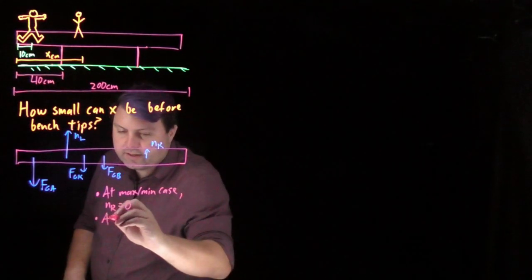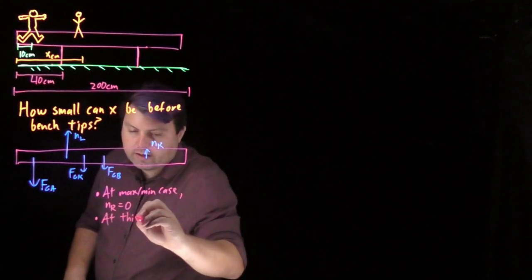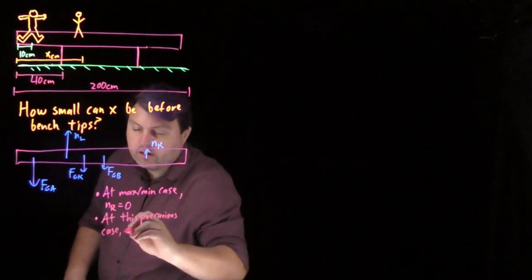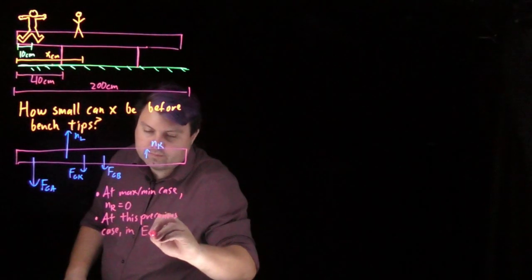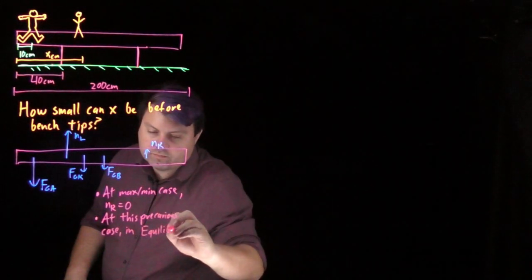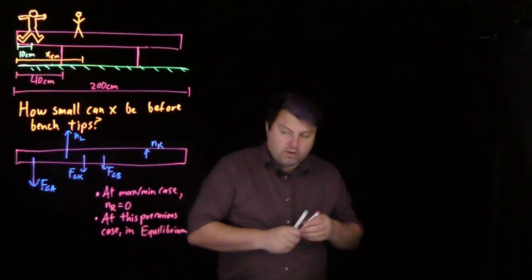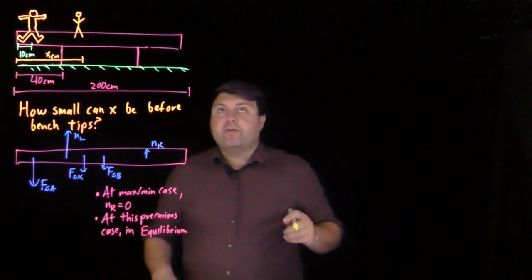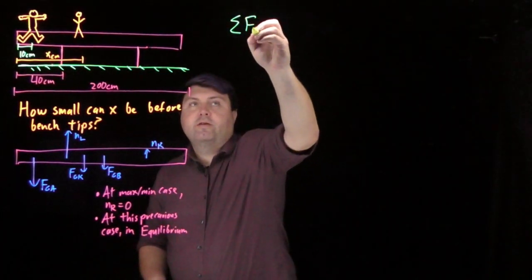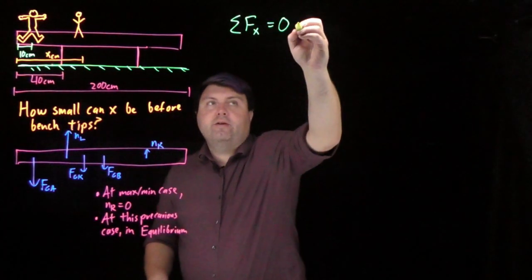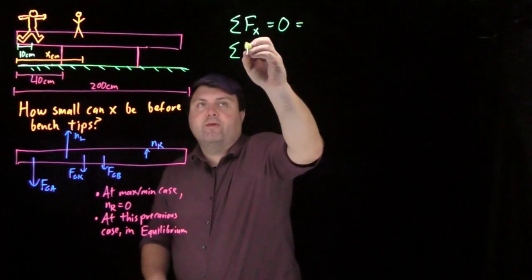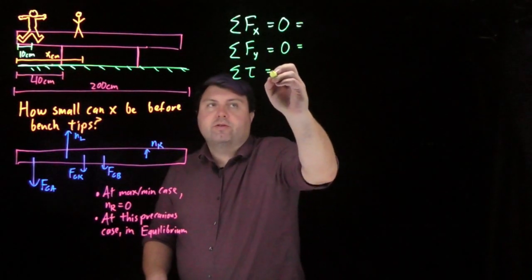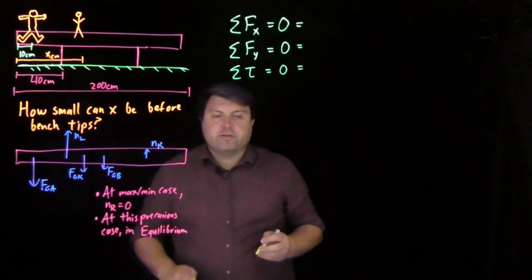But at this case, we are still in equilibrium. So in equilibrium, we know that our sum of our forces in the x is zero. We can write out this equation later. The sum of our forces in the y is zero. We can write this equation later. And the sum of our torques, we can write this equation very soon.